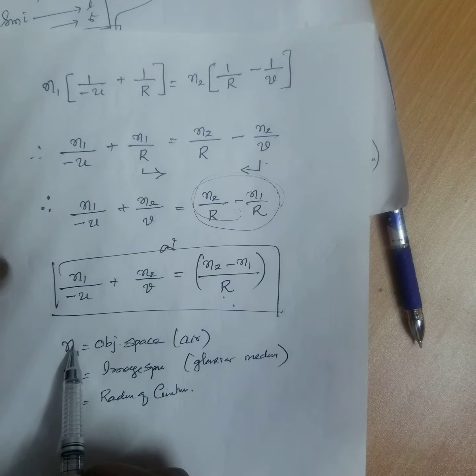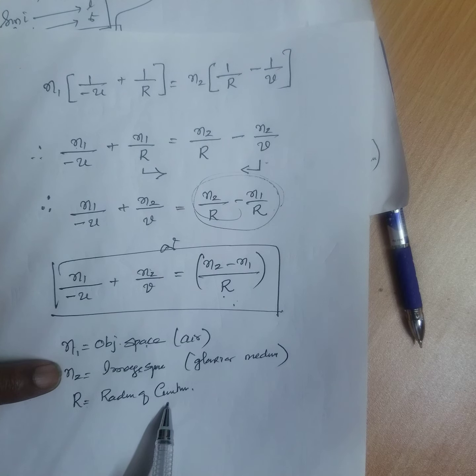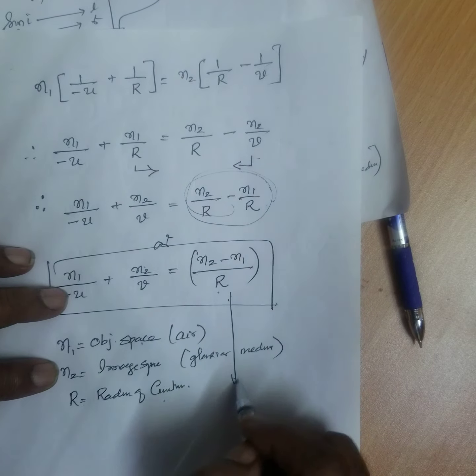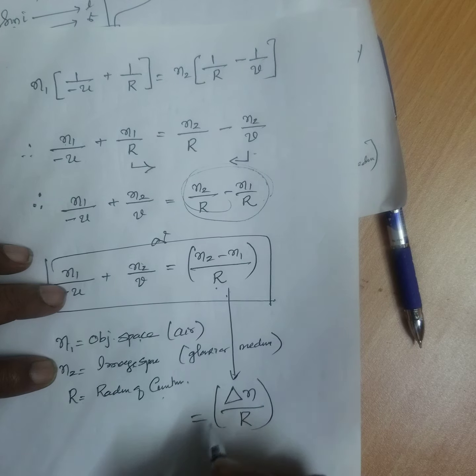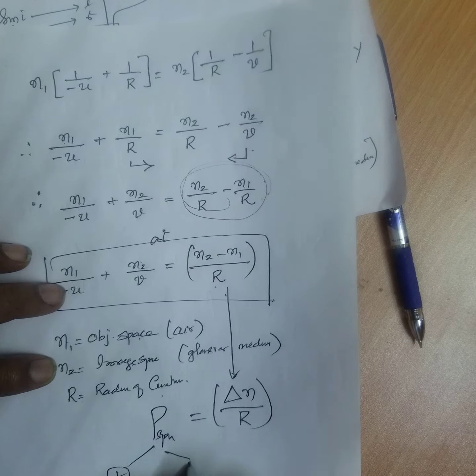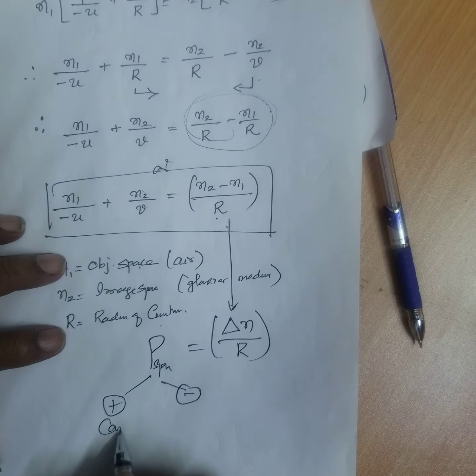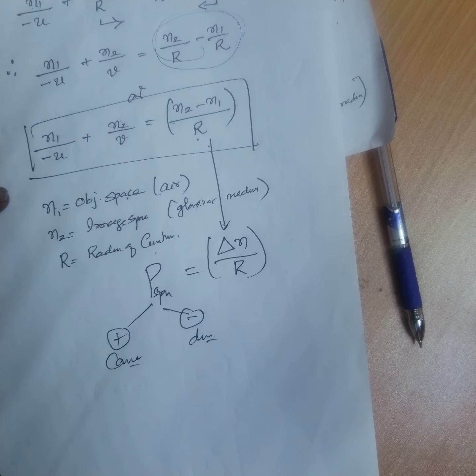What is N1? N1 is object space. N2 is image space. R is radius of curvature. This difference of refractive index by R is the power of a spherical surface. It may be positive or negative depends upon whether it is convergence or divergence. That I will discuss in the next class. Thank you.